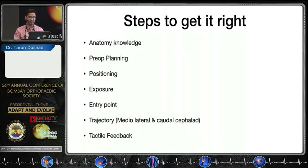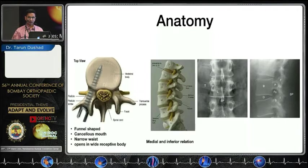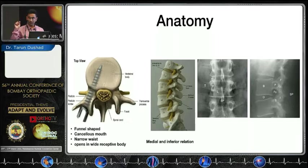So what are my reliable tools for the technique? Anatomy is foremost. Understanding pedicle anatomy is the most reliable foundation. The pedicle is a funnel-shaped structure with a cancellous mouth — a cancellous footprint — with a narrow waist or isthmus, opening into a receptive vertebral body. Important relations include: just inferior lies the exiting nerve root, and medially the thecal sac.